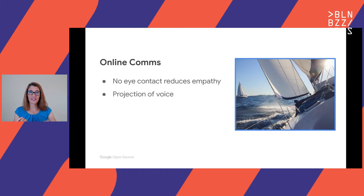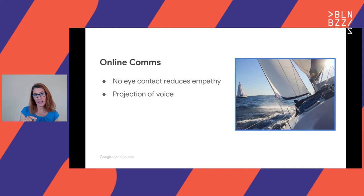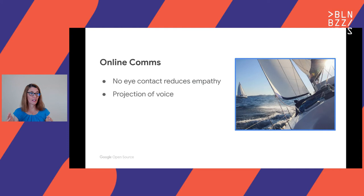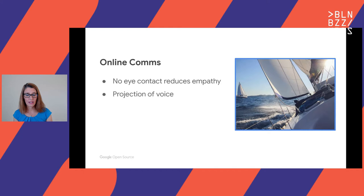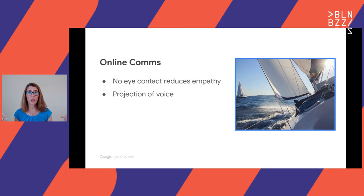The other thing that happens is how we project a voice onto someone's communication. When an email comes in or we're reading Twitter, we are assigning a more negative voice than what the person intended — research shows this happens almost always. So when working in online environments, because of the way our brains are wired, we aren't as empathetic as we are in person, and we assume the worst of how people are communicating with us. That really puts us at a disadvantage.